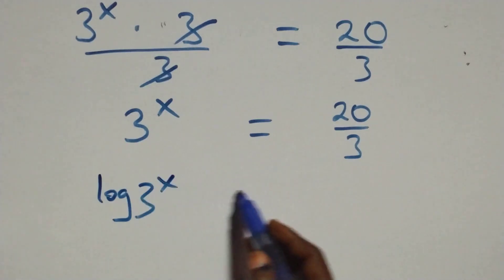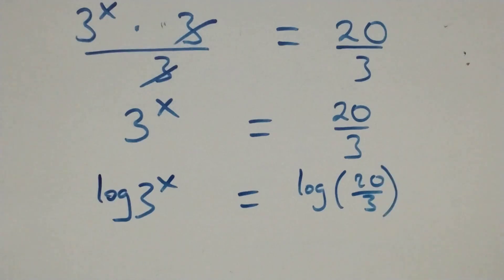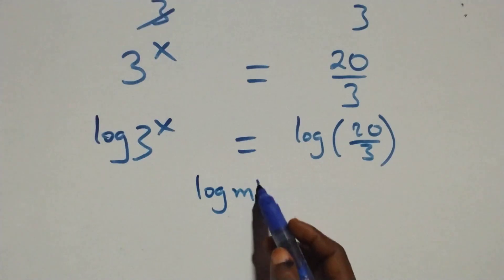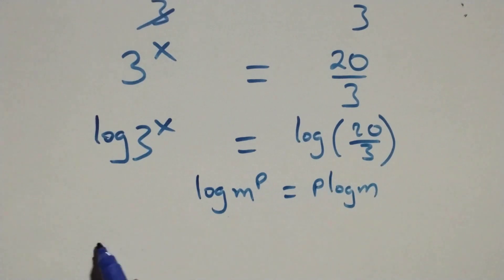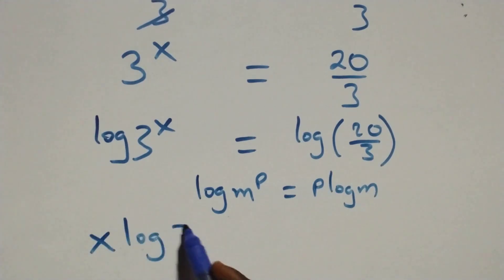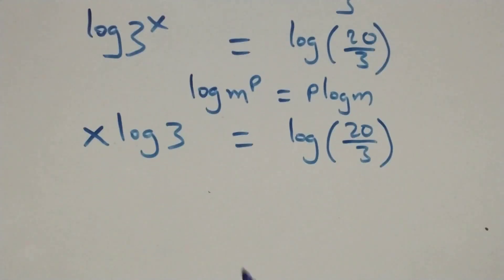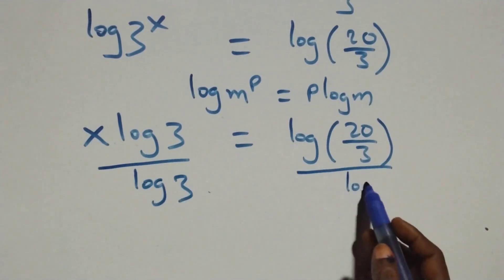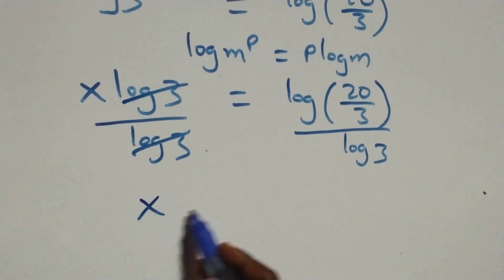That is, we have log 3 raised to power x equals to log 20 over 3 on this side. Next step, we apply the power rule of logarithm, where log n raised to power p is the same thing as p log n. What we have here becomes x log 3 equals to log 20 over 3. We divide both sides by log 3.